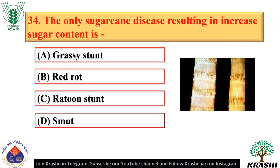Question number 34. The only sugarcane disease resulting in increased sugar content is ratoon stunting disease — option C. It is caused by Clavibacter xyli.